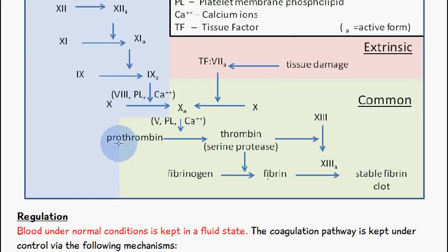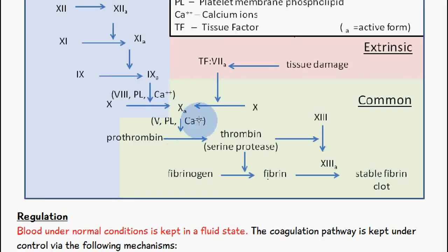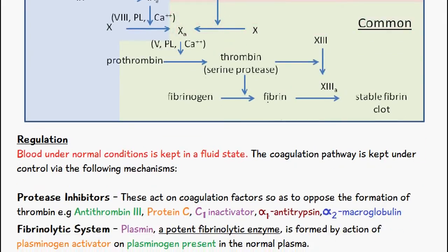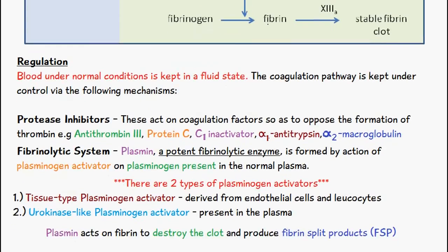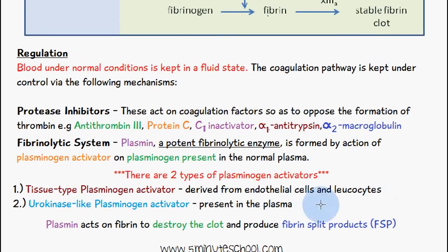Thrombin is converted from prothrombin, and there are a variety of clotting factors which lead up to this point. The end result of inhibiting these clotting factors is that we would not have thrombin formation. Another mechanism of regulation is through the fibrinolytic system.